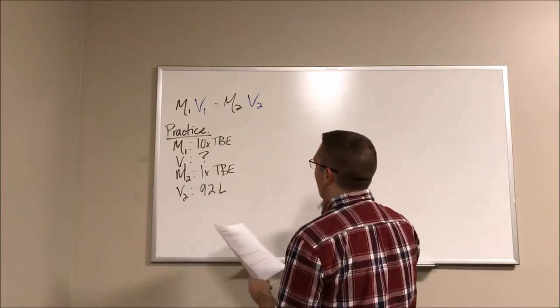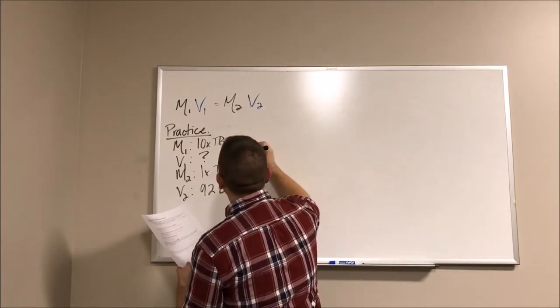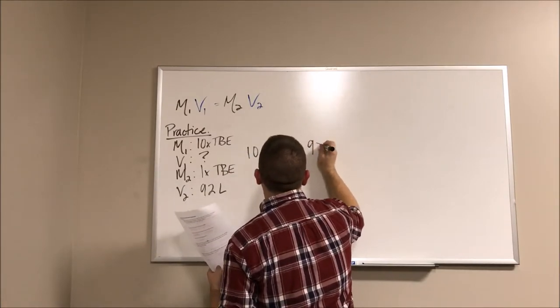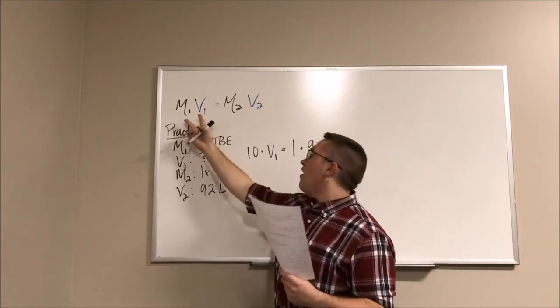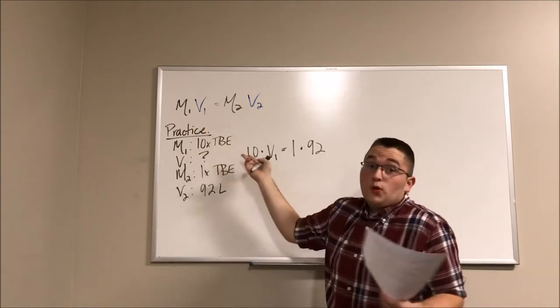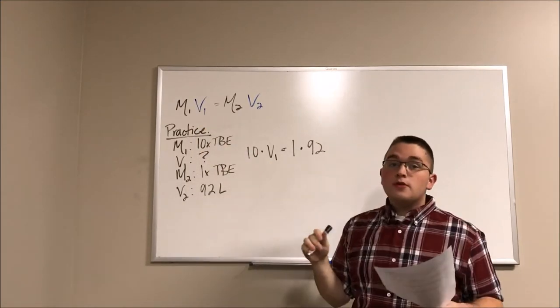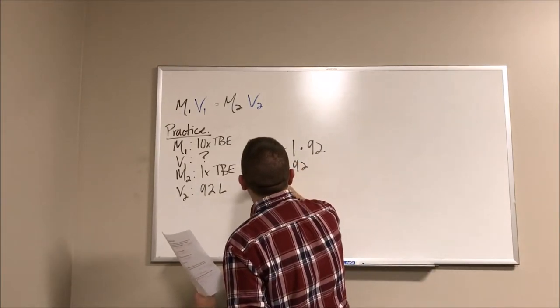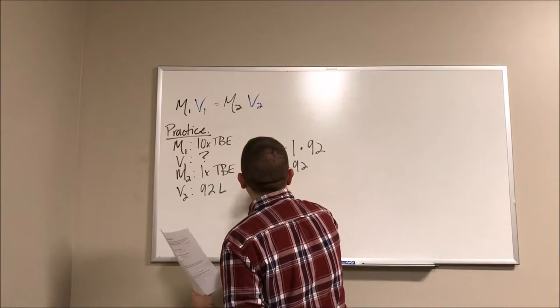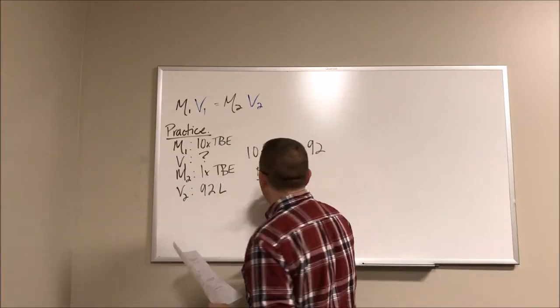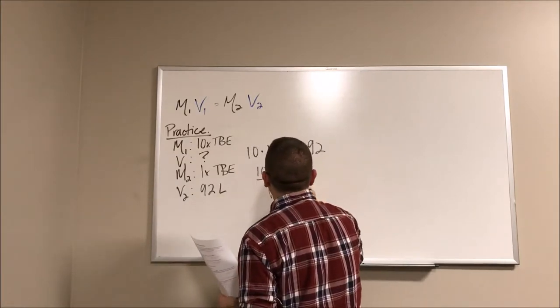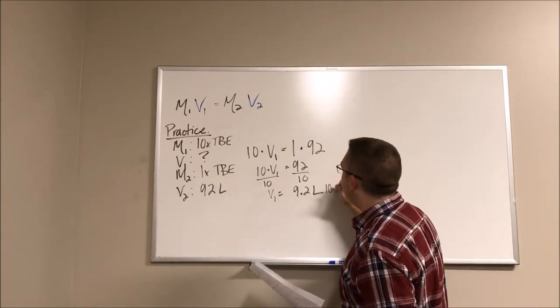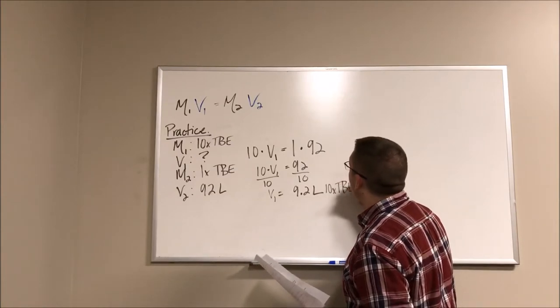So let's put this all together in the equation. So we got 10 times V1 equals 1 times 92. So simple math, 92 equals 10 times V1. Divide both sides by 10 to isolate or get V1 by itself. And that tells us that the volume is 9.2 liters. So that is how much of the 10X TBE we will need.